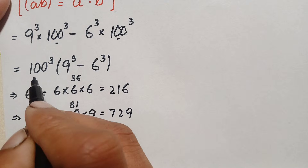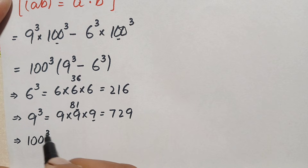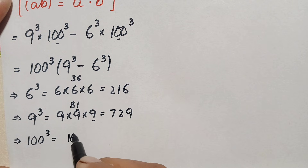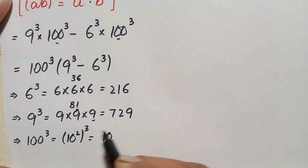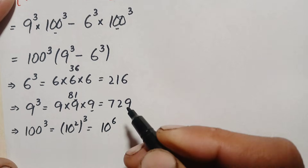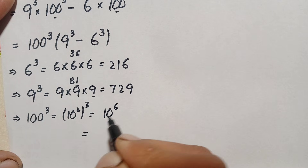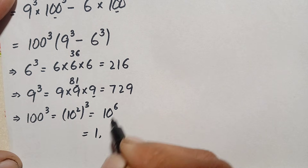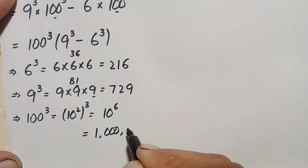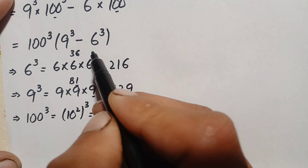Now we find 100 cubed. We can write 100 as 10 squared, whole raised to the power 3. Using the exponential identity, we multiply the powers: 10 to the power 2 times 3 equals 10 to the power 6. Ten to the power 6 means 1 followed by 6 zeros, which equals 1 million.